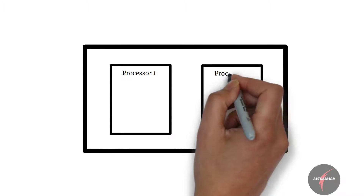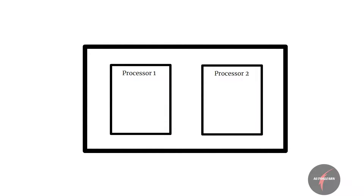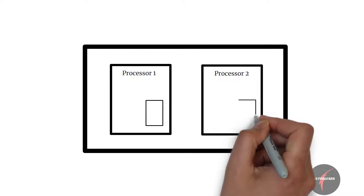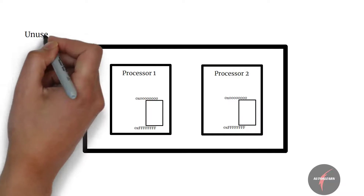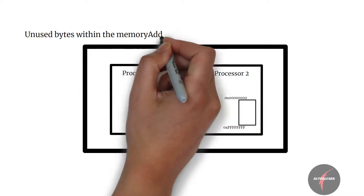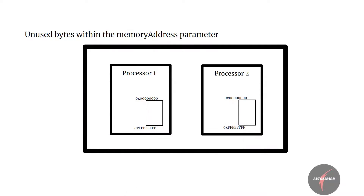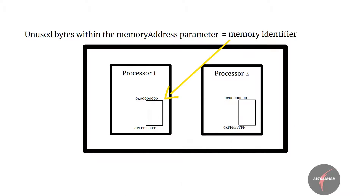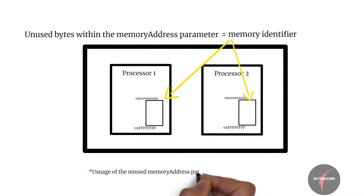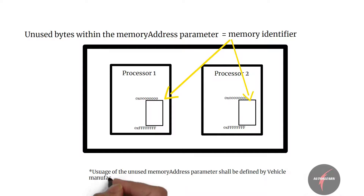If required, the most significant bytes of the address can be used as memory identifiers. For example, in case a dual processor server is used in the network which contains separate memory storage for each processor with the same address range, then to access a memory address in a specific processor, the unused bytes within the memory address parameter can be used by defining them as memory identifiers. Usage of the unused memory address parameter shall be defined by the vehicle manufacturer or system suppliers.